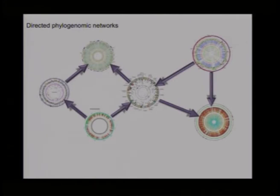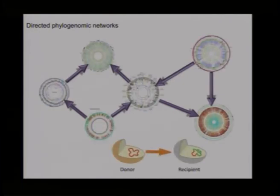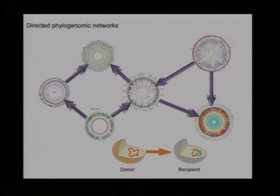What are directed networks? Again we have entities connected by edges, but these edges are directed — they carry additional information about the relation. In a social network example, one person sends an SMS and another receives it — sender and receiver are distinct. In biology, a lateral gene transfer event always has a donor — the sending side — and a recipient — the taking side.